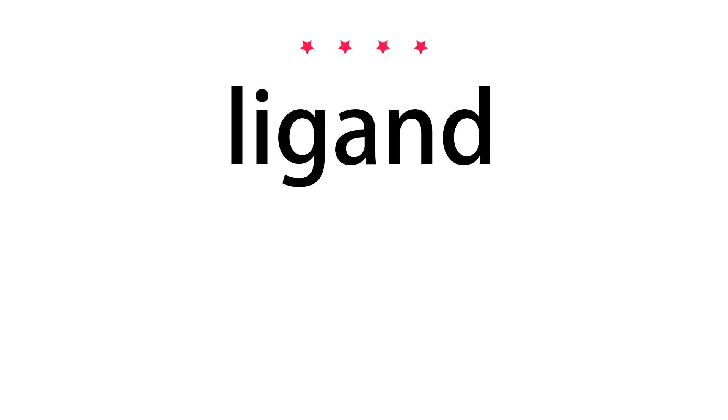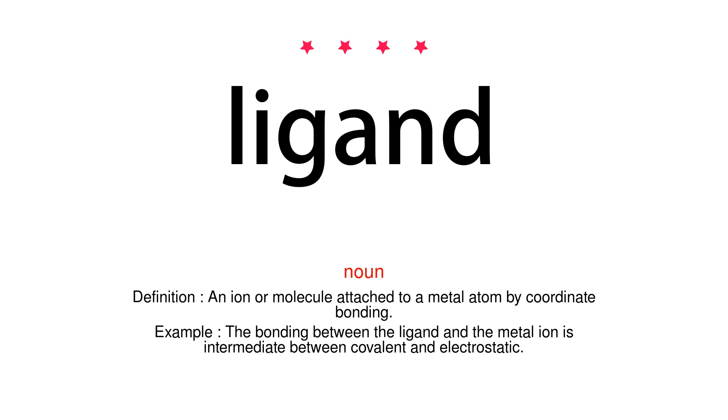Ligand. Noun. Definition: An ion or molecule attached to a metal atom by coordinate bonding.